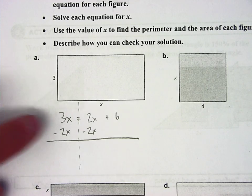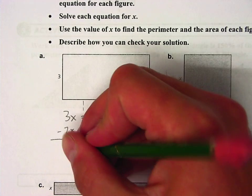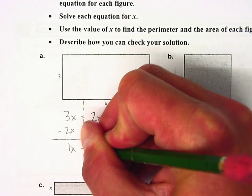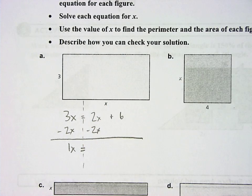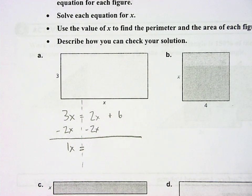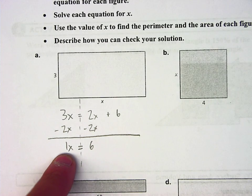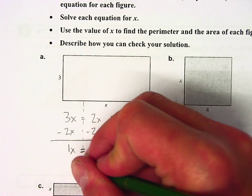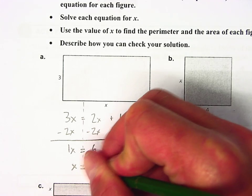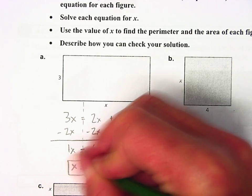That's going to help me. 3x minus 2x, well, that leaves me with just 1x. 2x minus 2x is 0. It canceled out. I'm left with 6, and the 1 is redundant. It doesn't do anything, so I can rewrite this x is equal to 6, and that is my answer.